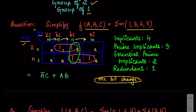We search for the largest possible group. A group of 8 is not possible, a group of 4 is also not possible, but we can make groups of 2 — and there are 3 possible groupings. However, the green group is actually redundant: even without it, the two pink groups cover all the 1s. So when finding the minimized expression you must not consider any redundant groups — only the two pink groups are needed.